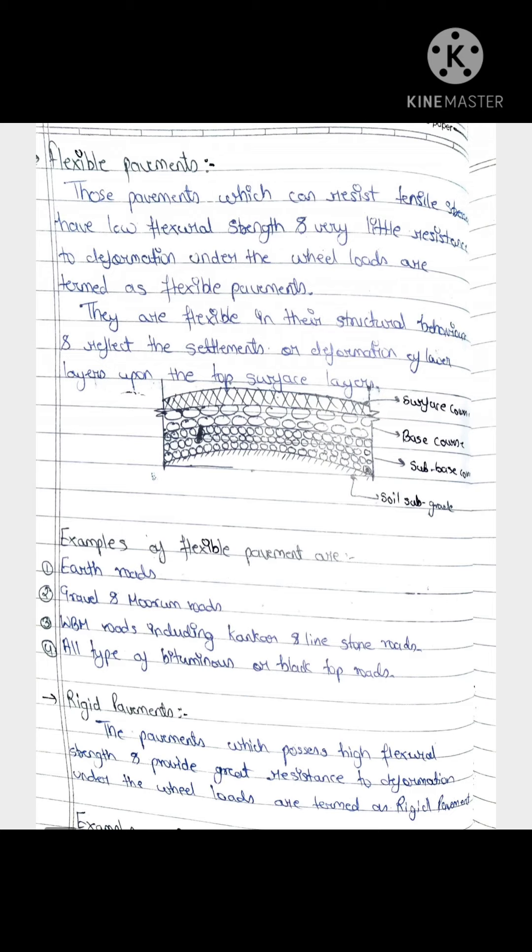Examples are earth roads, gravel roads, WBM roads - WBM is water bound macadam including conquered and limestone, then all types of bituminous and black top roads. These are all examples of flexible pavement. Now if I talk about rigid pavement.